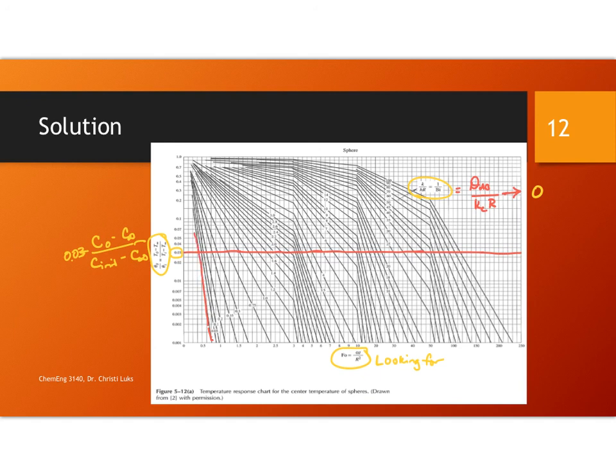So I find where these two pieces of information I know intersect, and then read straight down to find this value of the Fourier number. This value that I read here, I estimate it looks like it's about 0.38. I don't know. What do you think it is? You can use your own numbers. Be sure you are trying this on your own.